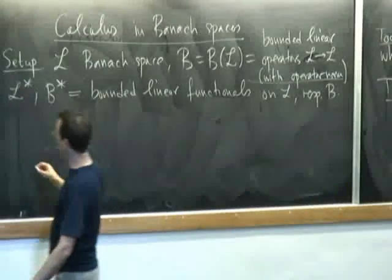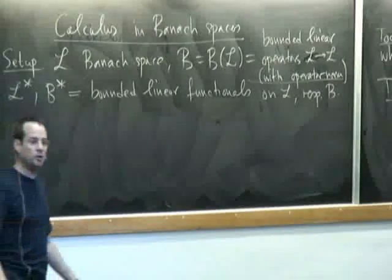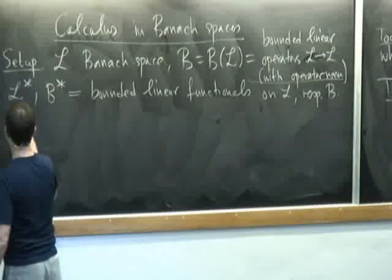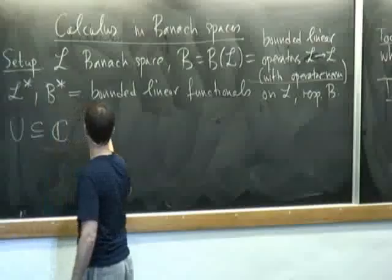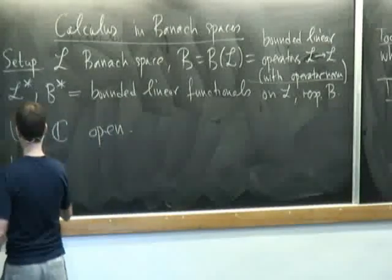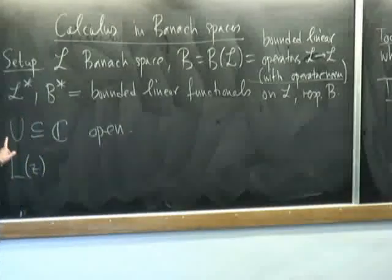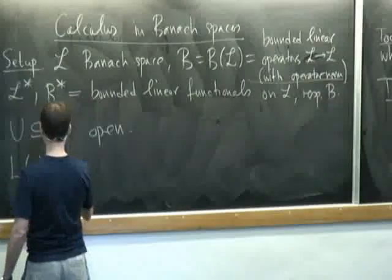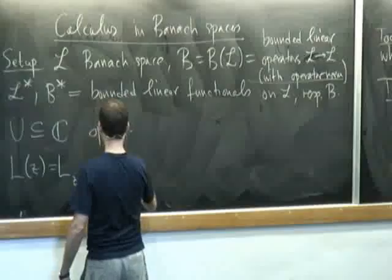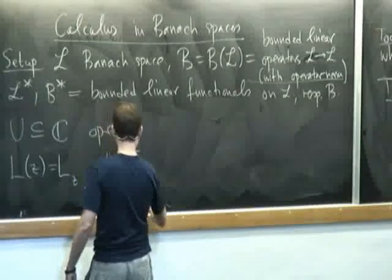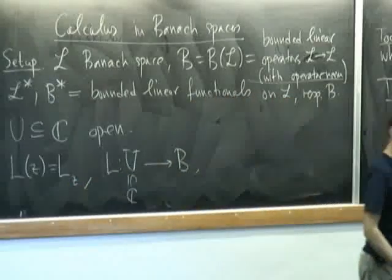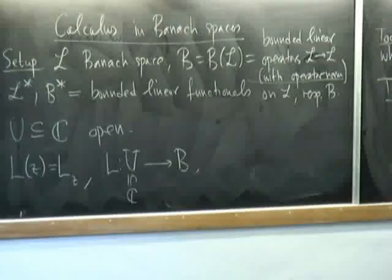We will be interested in complex one-parameter families of objects in L or in B. We will have some open subset U of ℂ, and we will have some operator depending on a complex number which lies in U — a map from U, inside ℂ, to B. This is what I mean by a complex one-parameter family of operators: some operator tagged by a complex parameter.